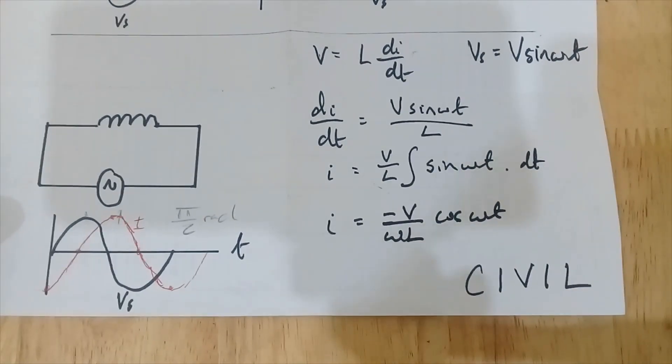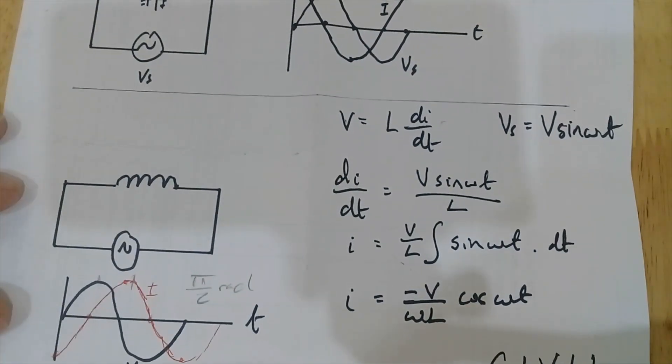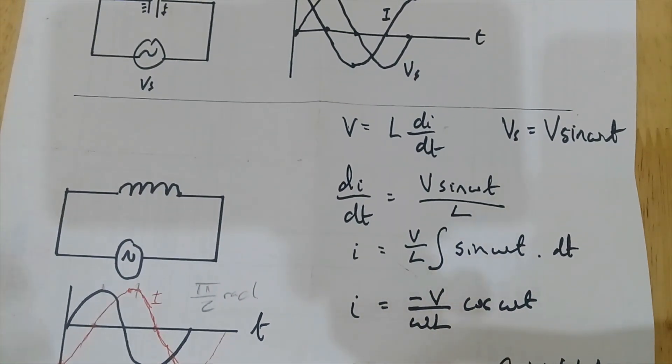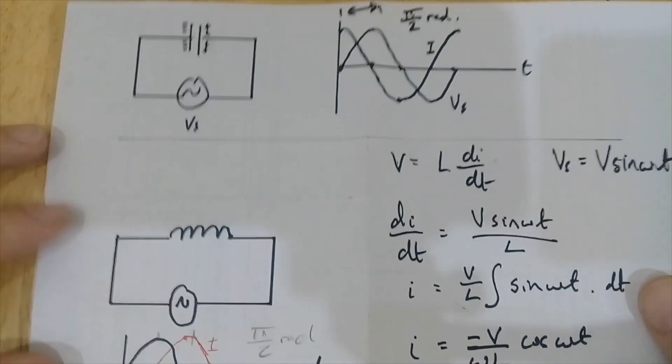It causes trouble because now, you know, through a resistor the power is just I times V.